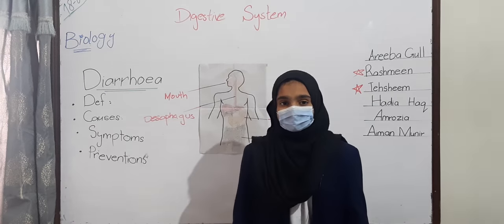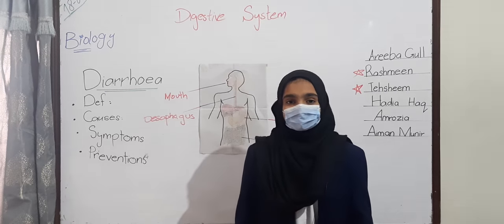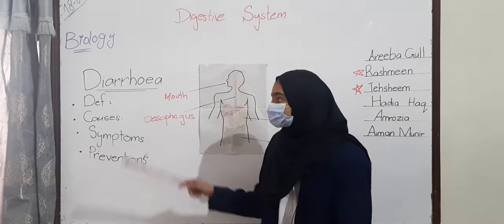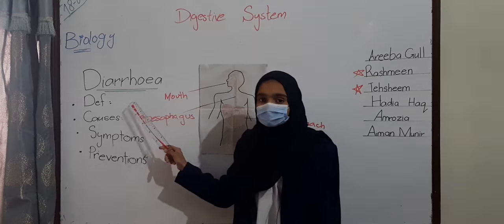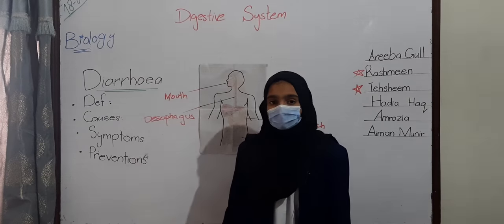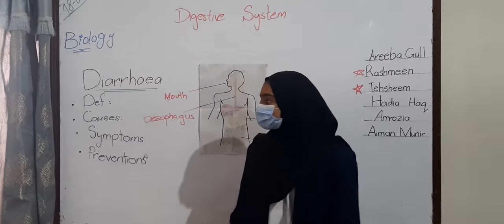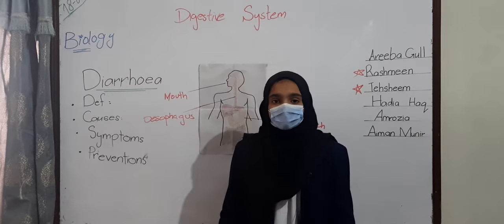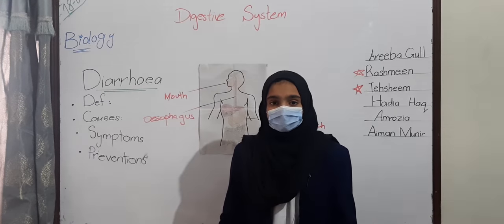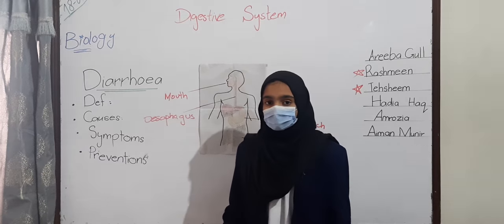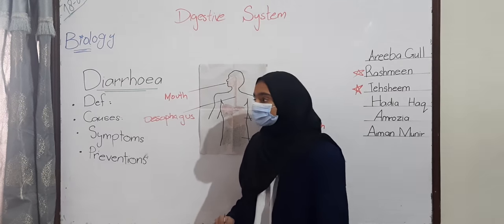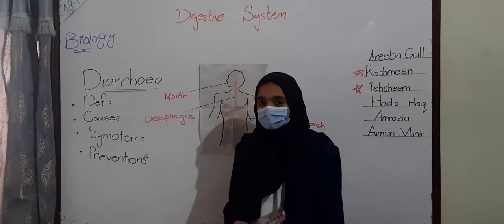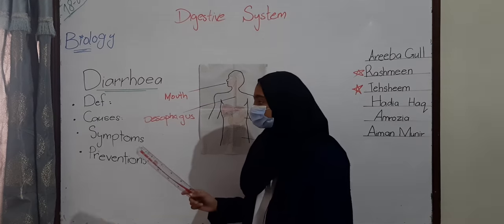Disorders of the digestive system. Diarrhea. Definition: Diarrhea is the passing of semi-liquid faeces. Causes: The causes of diarrhea include infection, eating contaminated food, or anxiety and excitement.